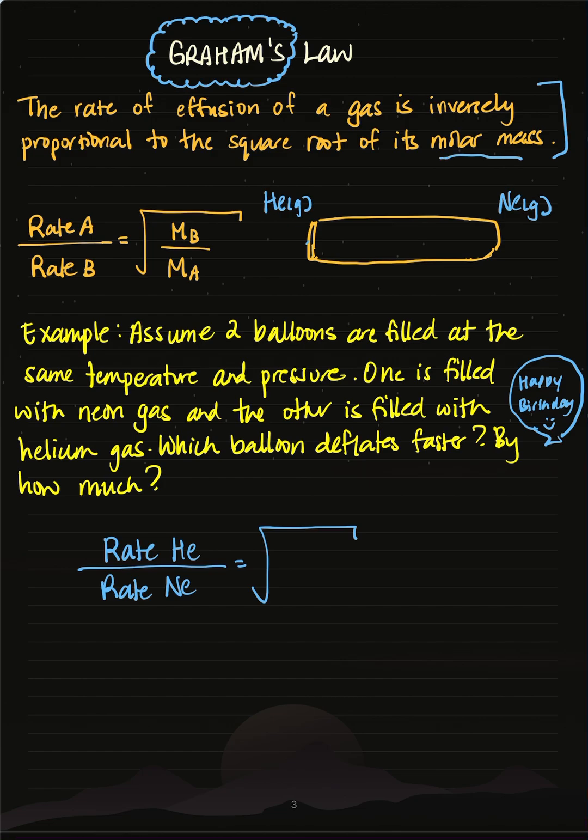We're looking at heavy and light based on their molar mass. For example, helium has a molar mass of 4.0 grams per mole, so it's light. Neon has a molar mass of 20.2 grams per mole, so it's heavier.